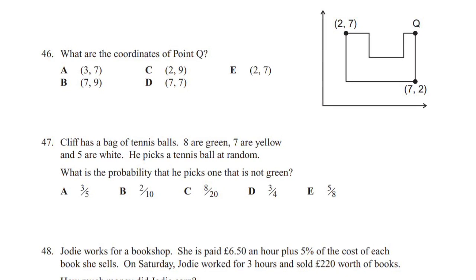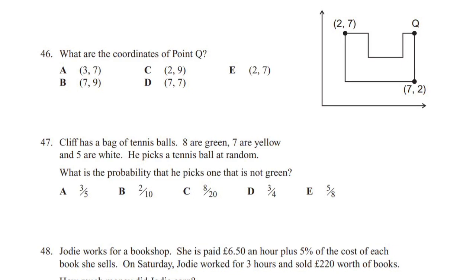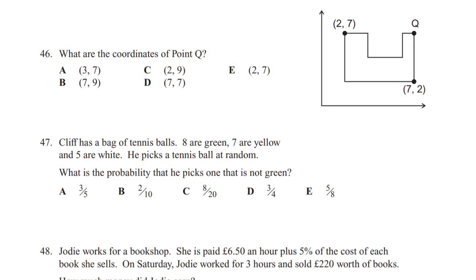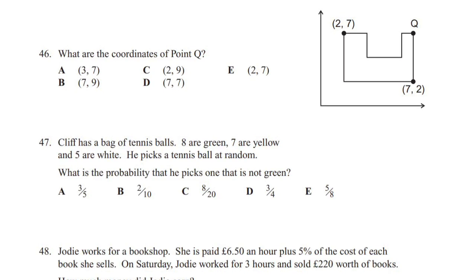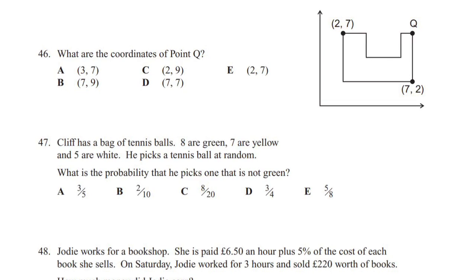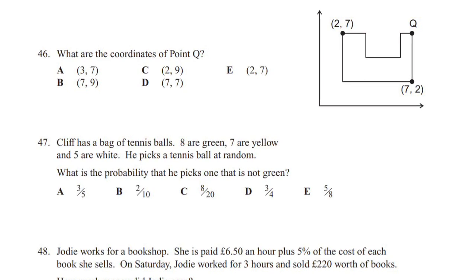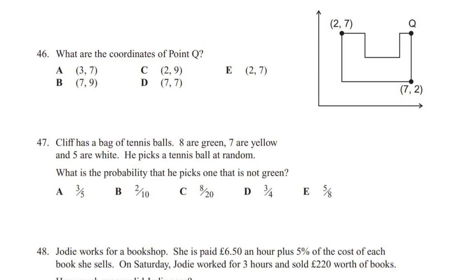Now, the question asks us to find the probability of picking one that is not green. Therefore, we need to add the values of yellow and white together. Seven plus five is equal to 12. And as we have 20 balls, we have 12/20, meaning that the probability is equal to 12/20.